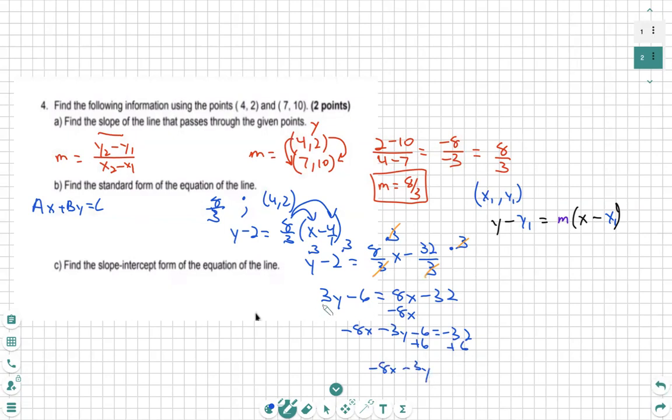It should be plus 3y. Change that. The sign for 3y should not have changed. Negative 8x plus 3y equals negative 22.